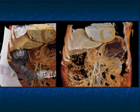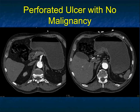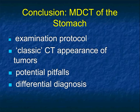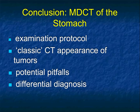One more example — look at that ulceration, a classic appearance. That patient also perforated with no malignancy — you would have been concerned, but there was no malignancy. So now I've gone through a number of the different gastric tumors, spoken to you about exam protocol, discussed classic and not-so-classic appearances of adenocarcinoma, lymphoma, GIST tumor, and metastasis. I've spoken about pitfalls and differential diagnosis — things like annular pancreas, glomus tumors, or simply gastritis with ulceration.